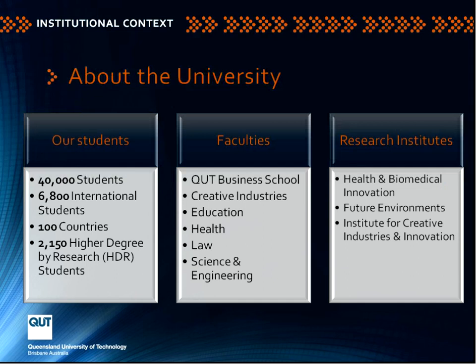A few things about QUT: we're one of the larger universities in Australia with about 45,000 students now, 7,000 or so international students from 100 countries, and a growing number of higher degree by research students past 2,000 and going up. We have six faculties — the QUT Business School, Creative Industries and others — and three research institutes.